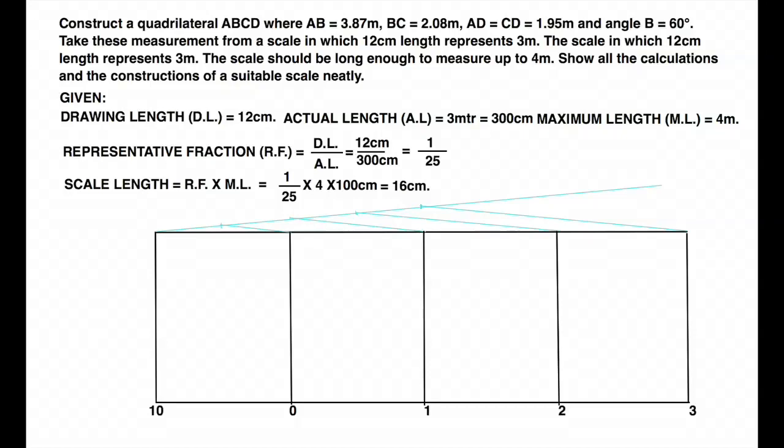You write 0, 1, 2, 3 on right hand side and 0 to 10 on left side because we have to divide the first block into 10 parts. Remember that we have to mark 3.87 meter. So we will have meter on right side and decimeter on left side.